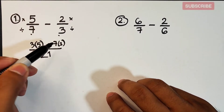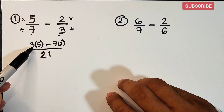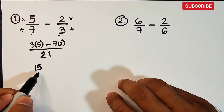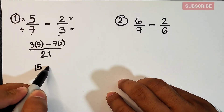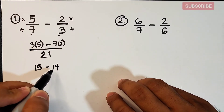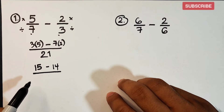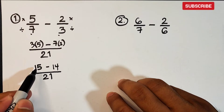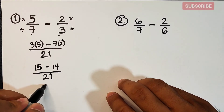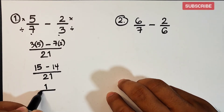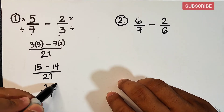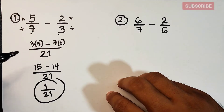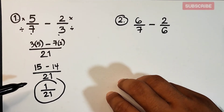So what we have is 3 times 5, which is 15, minus 7 times 2, which equals 14. We copy the denominator, which is 21. So we have 15 minus 14, which is equal to 1 over 21. This is the difference between 5 over 7 minus 2 over 3.